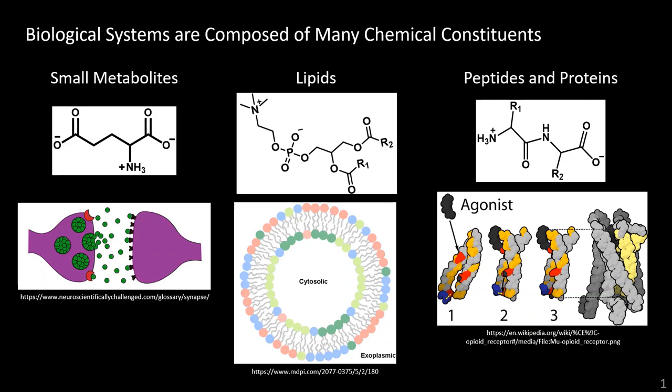Today I'm going to be discussing how we measure the chemistry in different biological systems. As mass spectrometrists we largely study small metabolites, lipids, peptides and proteins. Peptides and proteins are encoded by genes and are the workhorses of many biochemical pathways. The products of these pathways consist of small metabolites and lipids, both of which are involved in signaling, while lipids also compose the bilayer of the cell. Nonetheless, all of these are fundamental to life.